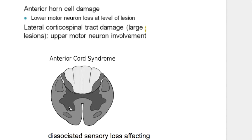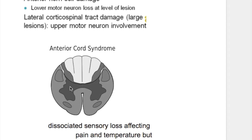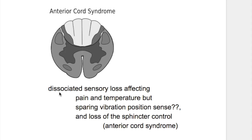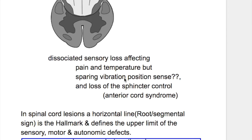Damage to the lateral corticospinal tract produces an upper motor neuron lesion — spasticity, hypertonia, hyperreflexia, and a positive Babinski sign. The sensory loss is a dissociated sensory loss because it affects the spinothalamic tract, while the dorsal columns, which are located posteriorly, are not affected. Therefore, vibration and position sense carried by the dorsal column tract are spared.